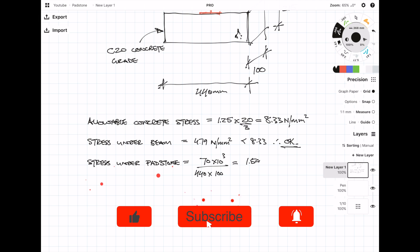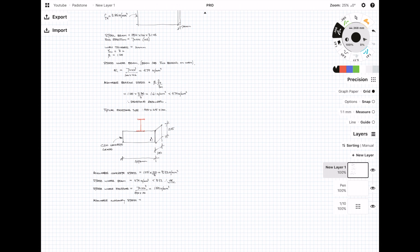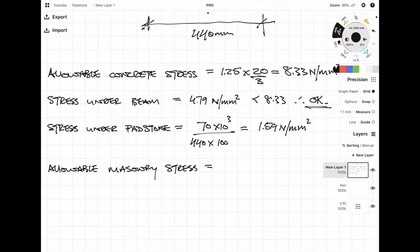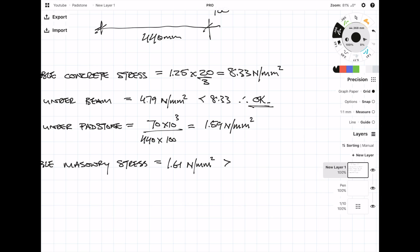And this gives us a stress of 1.59 newtons per millimetre squared. Previously we had already worked out the allowable masonry stress and that came to 1.61 newtons per millimetre squared. So because the allowable stress is greater than the stress applied of 1.59, therefore the size of the padstone is adequate.